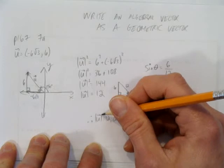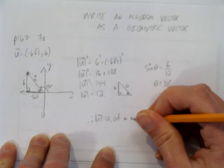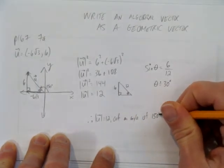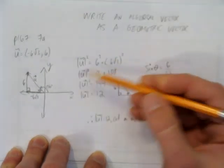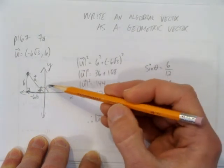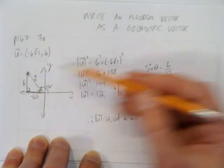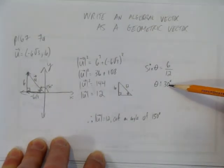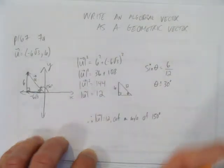So vector u has a magnitude of 12 at an angle of 150 degrees. We found a geometric vector from its algebraic vector by drawing the algebraic vector in its quadrant, breaking it down into its x and y parts, solving for its magnitude using Pythagorean theorem, and then using SOHCAHTOA to find its related acute angle. When we found that, we had its magnitude and could determine its angle with the x-axis.